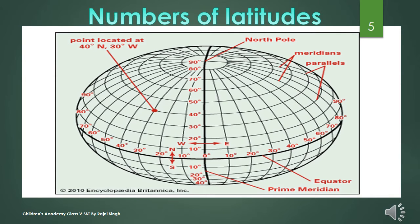Now we will know some facts about parallels. There are 181 parallels or lines of latitude in total: 90 parallel lines in the north, plus the equator at 0 degrees, plus 90 parallels in the south. Among all parallels, the equator is the most important and is also called the great circle.